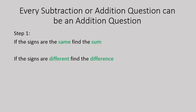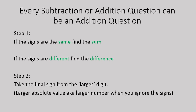If the signs are different, like a positive plus a negative or a negative plus a positive, you find the difference. So you'll subtract and you take your final sign from the larger digit, or in other words, the larger absolute value or the larger number when you ignore the signs. You'll see this several times in the examples that we do today.